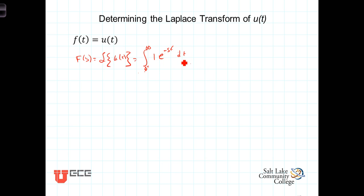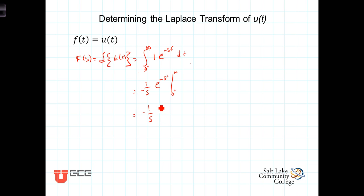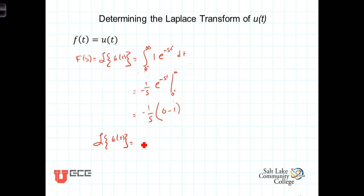When we do that integration, we end up with negative one over s out in front, times e to the minus st evaluated at the limits. That gives us negative one over s times — as we've seen in the past and will see over and over again — e to the minus infinity at the upper limit is zero, minus e to the zero which is one. So the Laplace transform of the unit step function is just one over s.